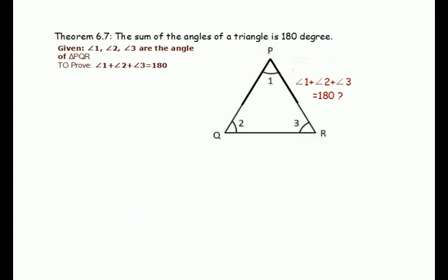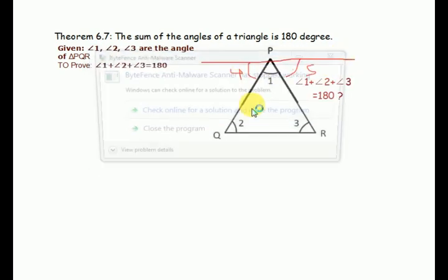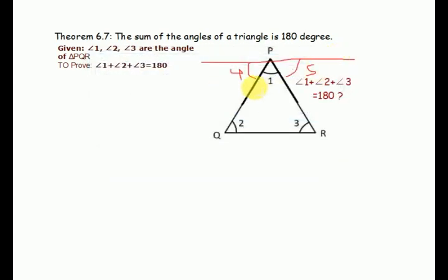Draw line XY to pass through point P. This line will be parallel to base QR. When we draw this line, it creates angles at point P. We'll call these angles 4 and 5.